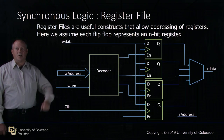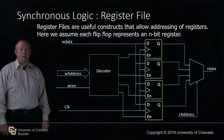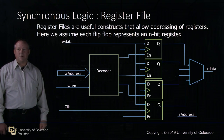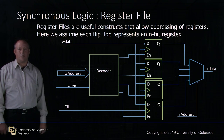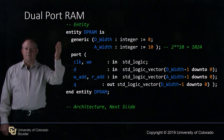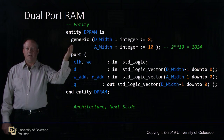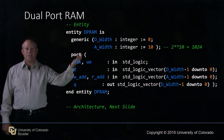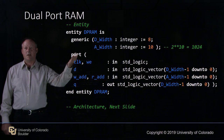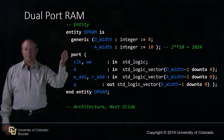Register files are useful constructs that allow addressing of registers, where each flip-flop represents an n-bit wide register. Here's our entity for a dual port RAM. We're going to use a generic with data width equal to 8 and address width set to 10. So in this case our address space would be 1024 addresses of 8-bit wide data.